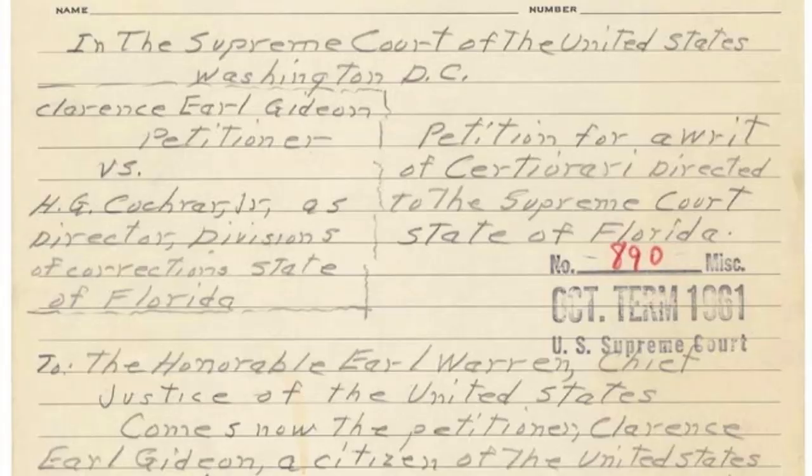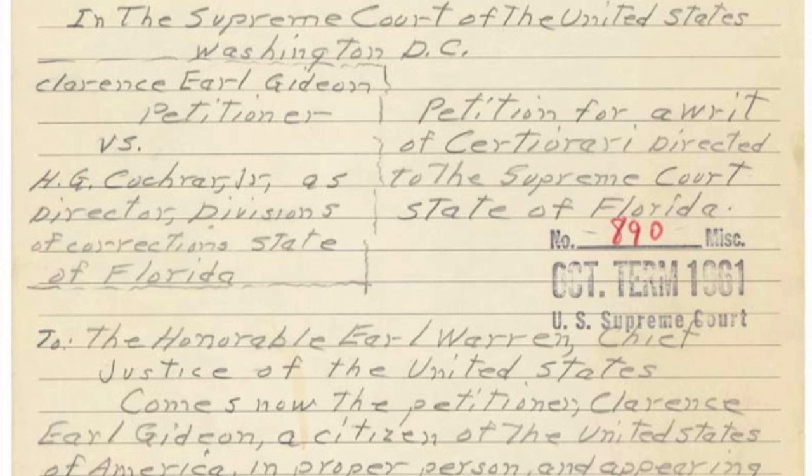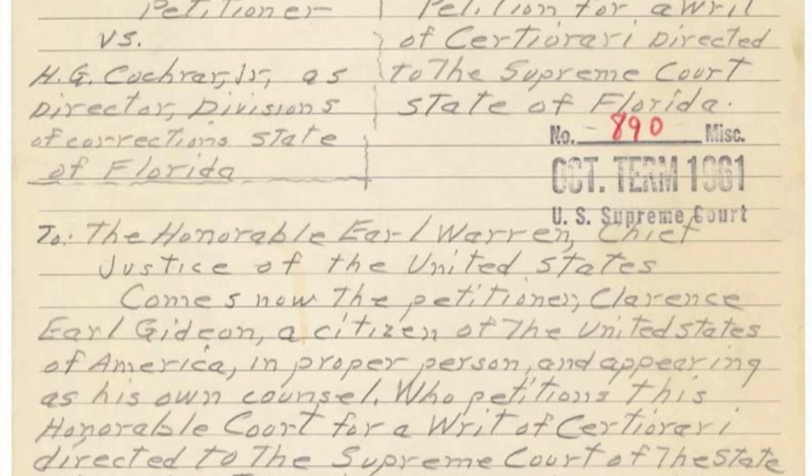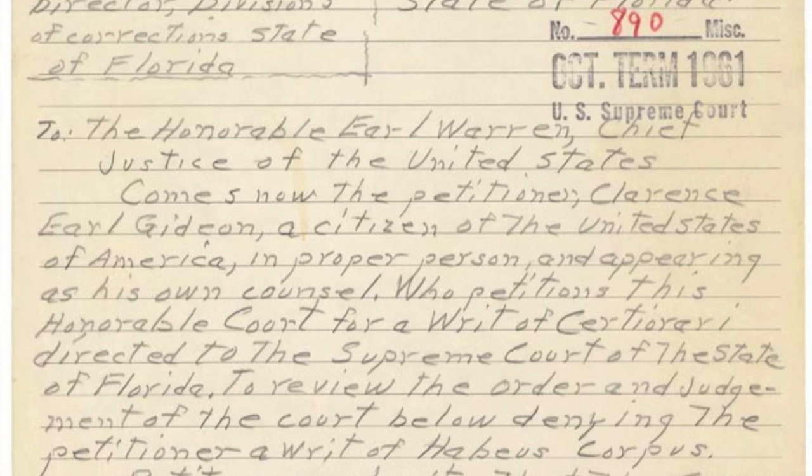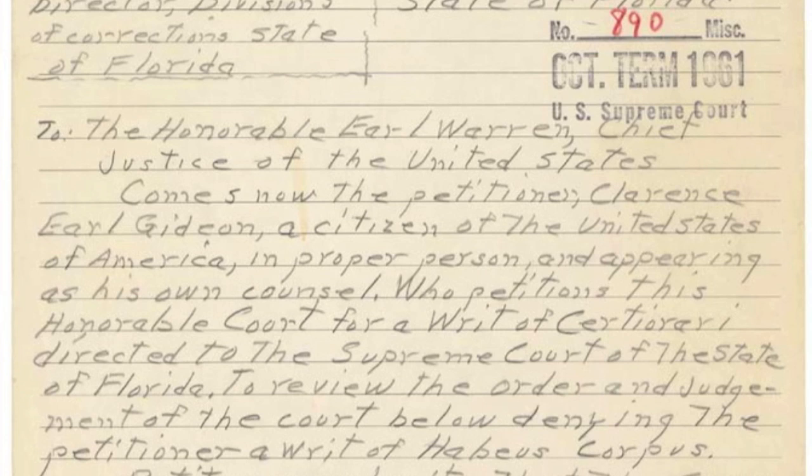You can see right here that he penned his own writ of certiorari — spelled a little differently than it sounds. This is a Latin term for basically appealing to the Supreme Court. He wants his court case heard, and he believes his constitutional rights have been violated. The court agrees and accepted his pencil-written hand copy of the writ of certiorari. And now we have ourselves a Supreme Court case.